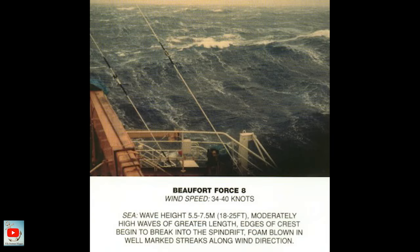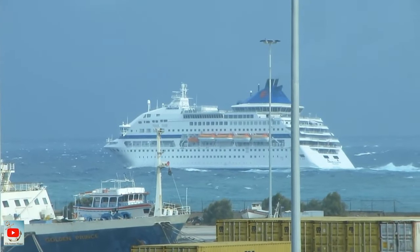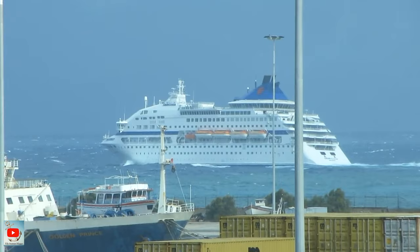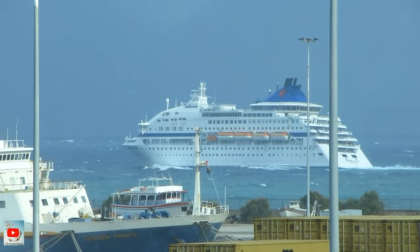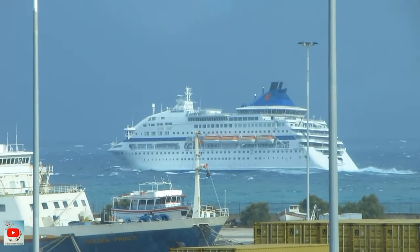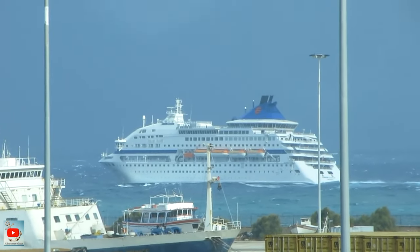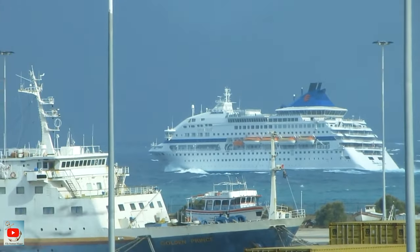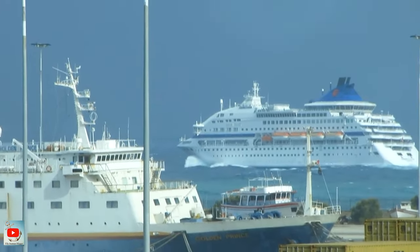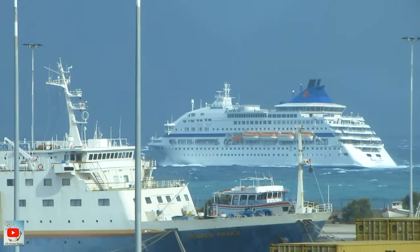Beaufort Force 8: wind speed 34 to 40 knots, sea wave height 5.5 to 7.5 meters or 18 to 25 feet — moderately high waves of greater length, edges of crests begin to break into spindrift, foam blown in well-marked streaks along wind direction.